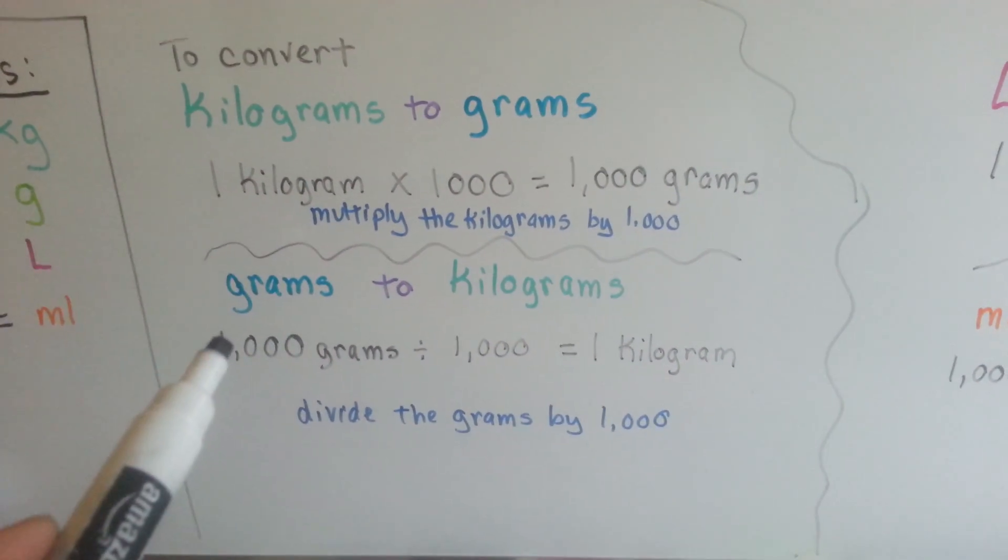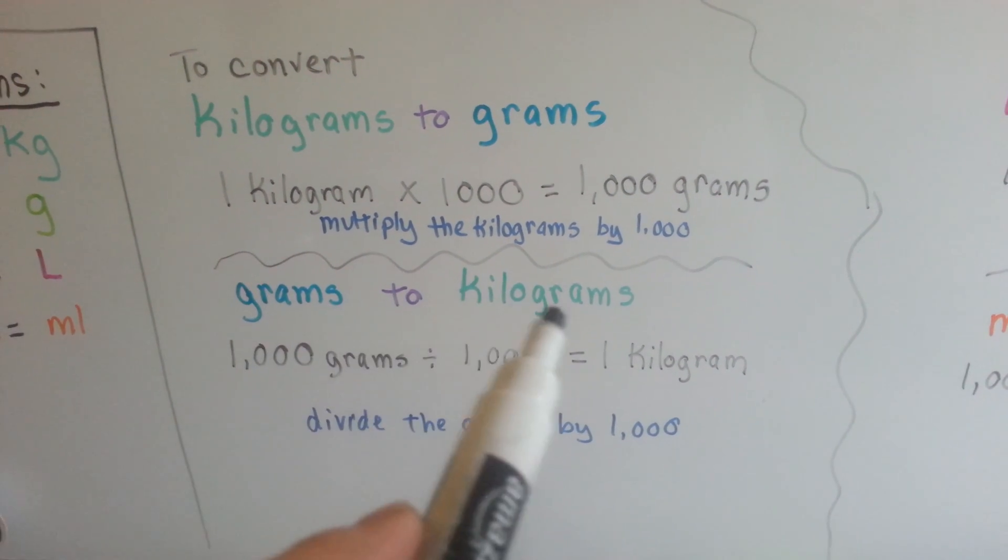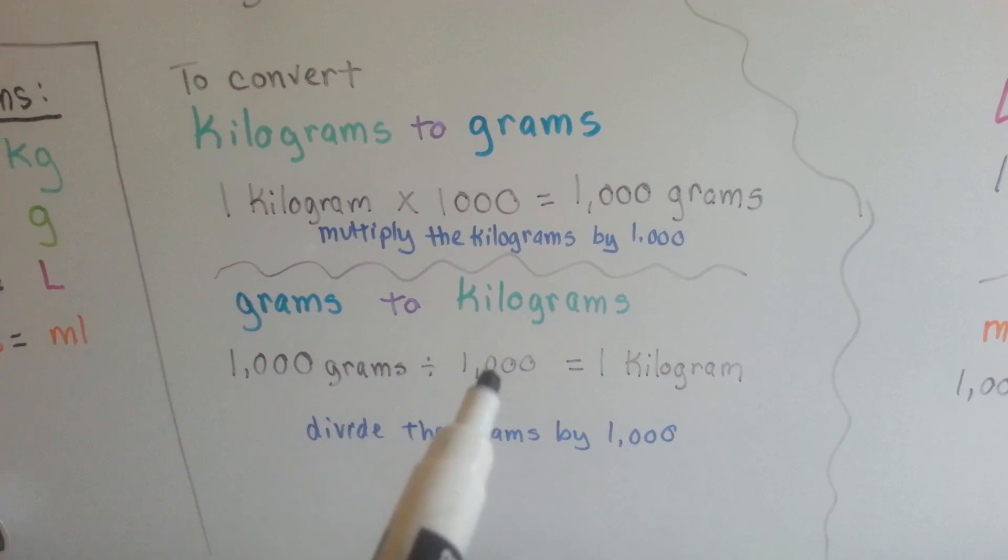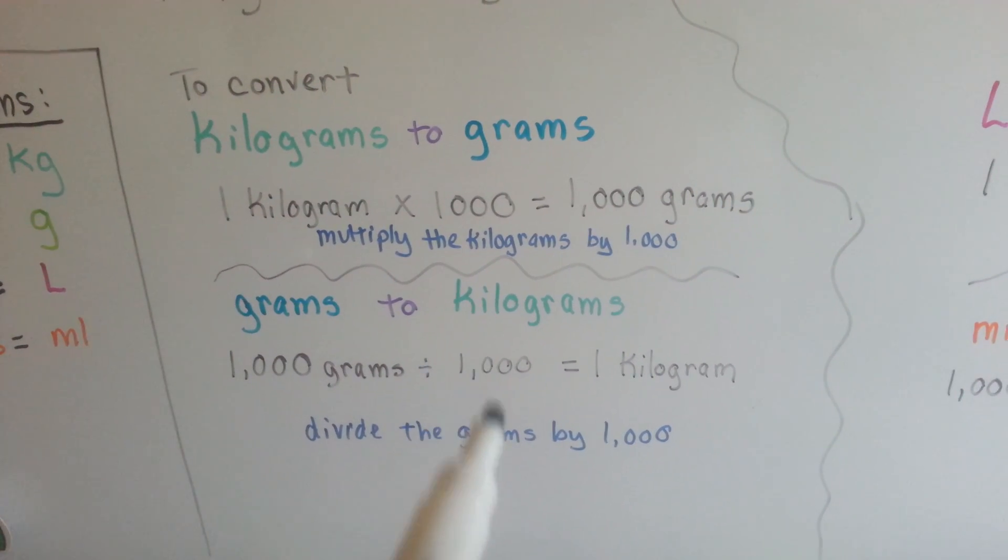If you want to go the other way around and turn grams into kilograms, we divide. So because there's a thousand grams in each kilogram, we divide by a thousand.